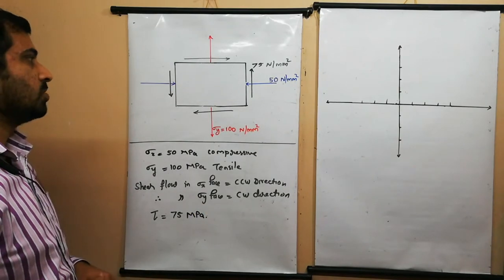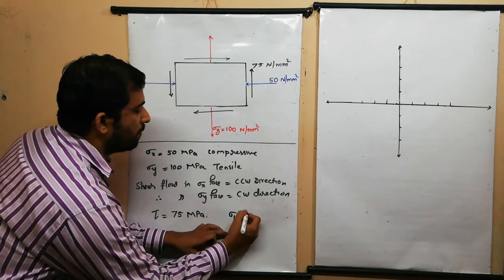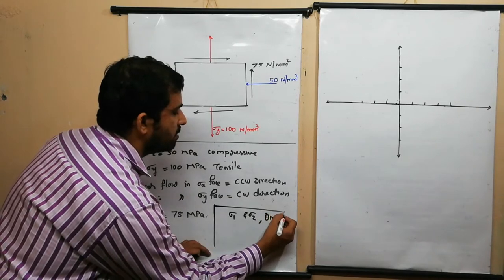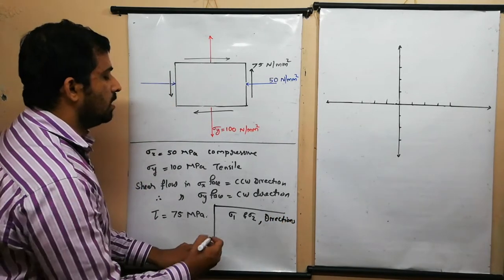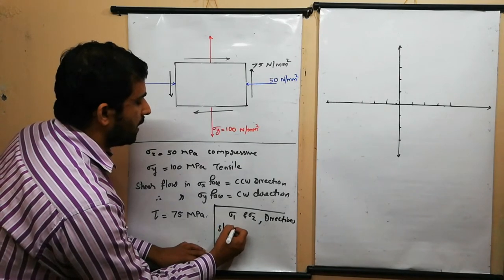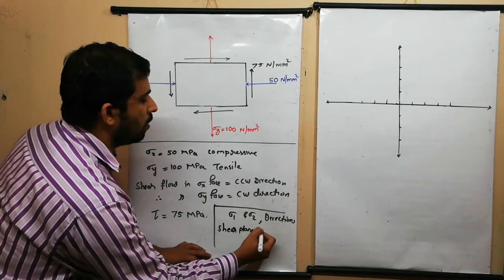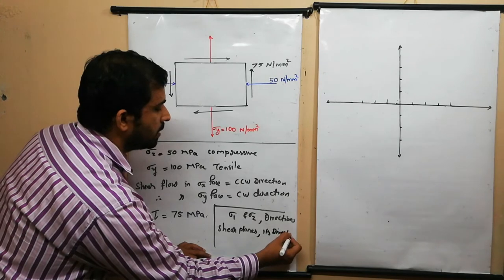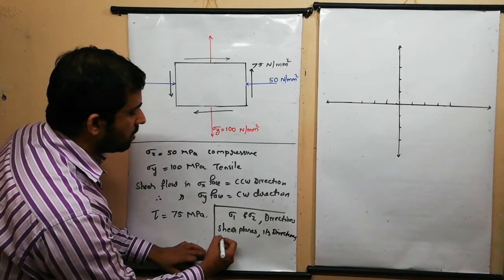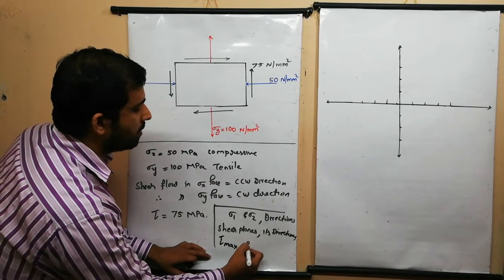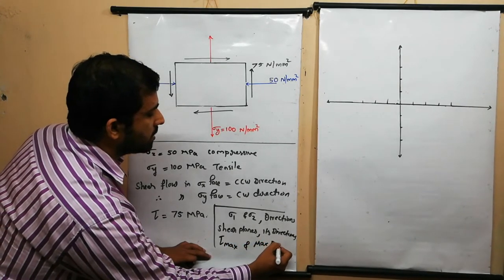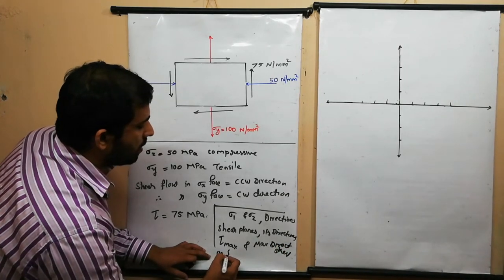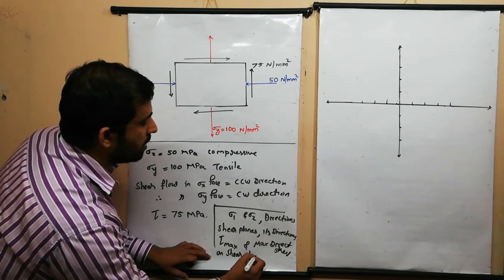In this question we are asked to find out the maximum and minimum values of principal stresses sigma 1 and sigma 2, their directions — meaning we need to find the principal planes — and also the shear planes and their directions. Then we need to find the maximum shear stress and the maximum direct stress on the shear plane.